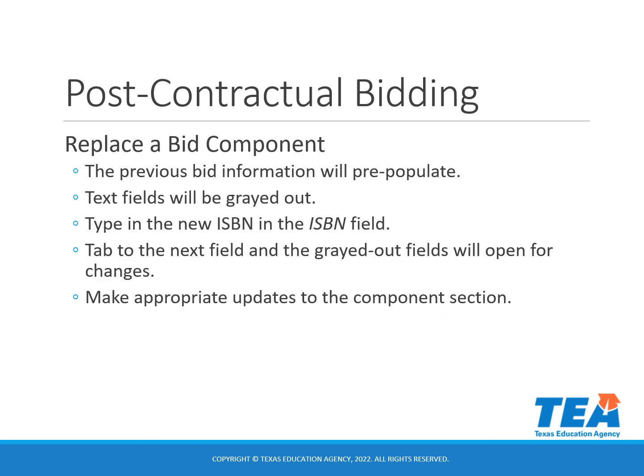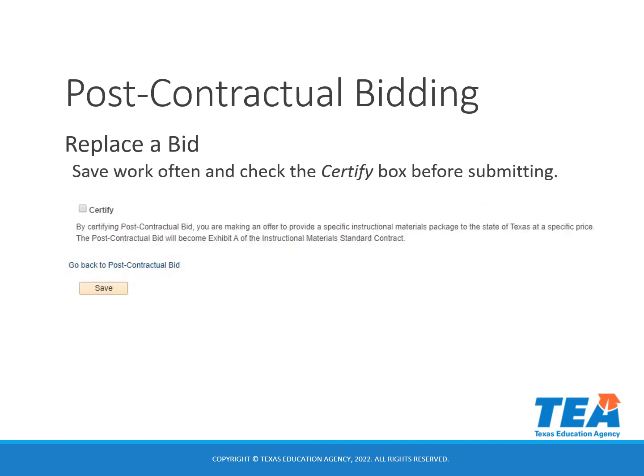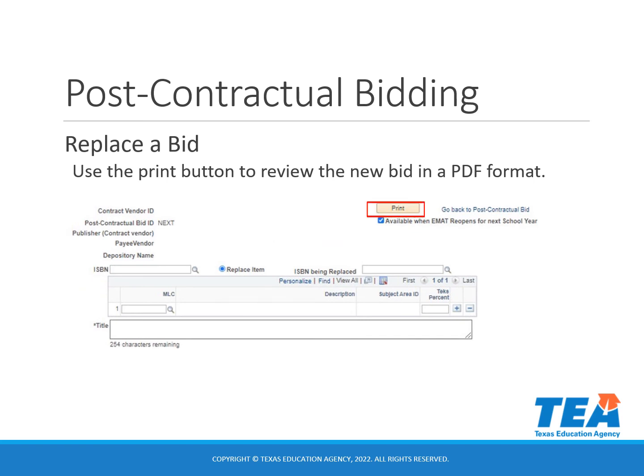If you use the magnifying glass to select an existing component ISBN, the previous bid information will pre-populate and the text fields will be grayed out. Type in the new ISBN in the ISBN field and tab to the next field — the grayed-out fields will open for changes. You will make appropriate changes to the component section. You will use the delete button to remove any components from the bid that are not needed. Save your work often and check the certify box before submitting. Use the print button to review the bid information in PDF format.